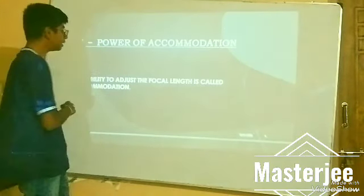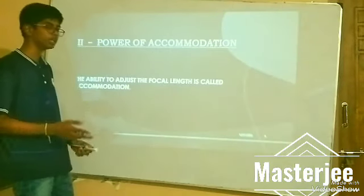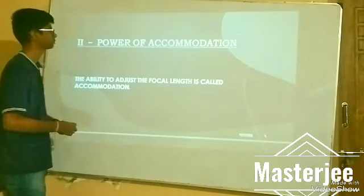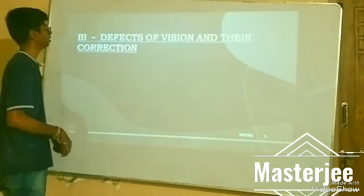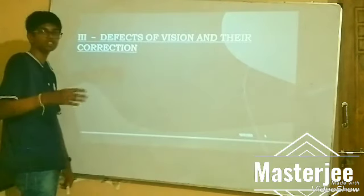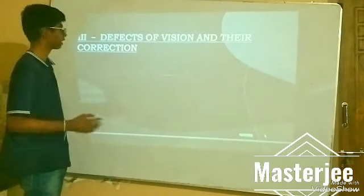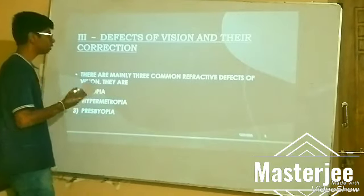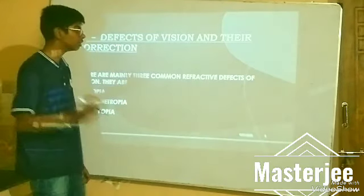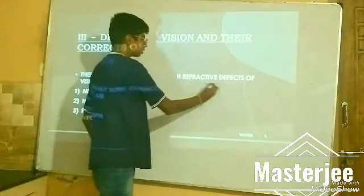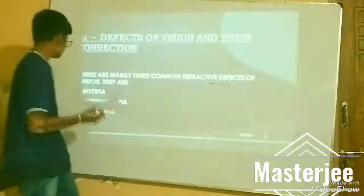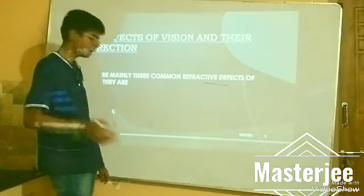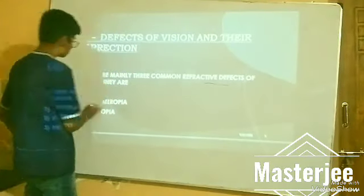The ability to adjust the focal length is known as Power of Accommodation. Moving on to defects of vision and correction — there are three main common refractive defects: myopia, hypermetropia, and presbyopia.